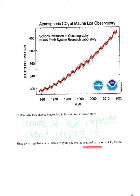Even though Mauna Loa is near the equator, there is still seasonal variation. Since the goal is a remote location not impacted by local conditions, why do we still see this? It comes down to global air circulation. In the northern hemisphere there is more land, and when it is summer in the northern hemisphere...